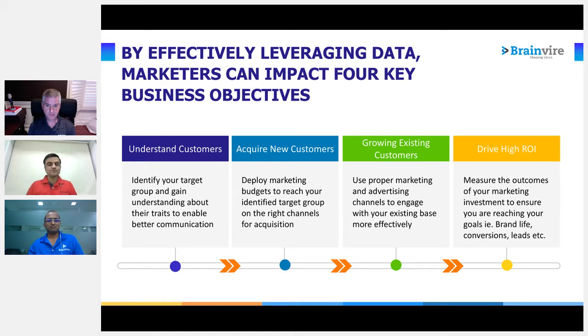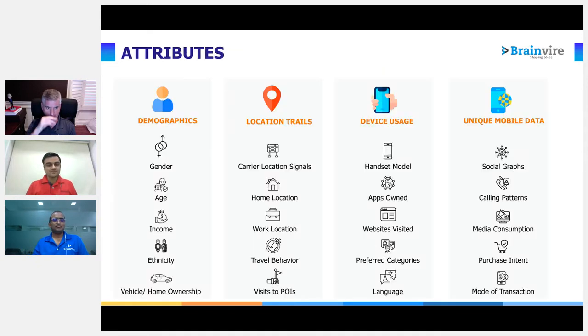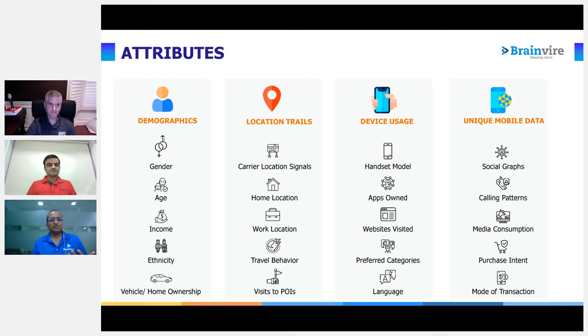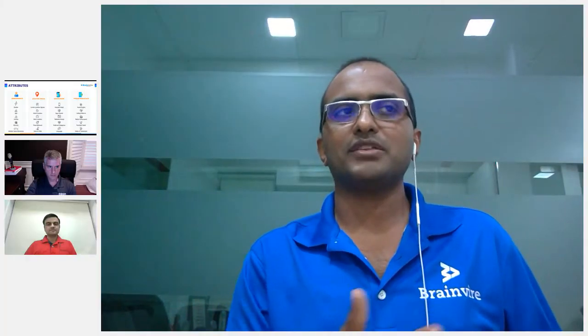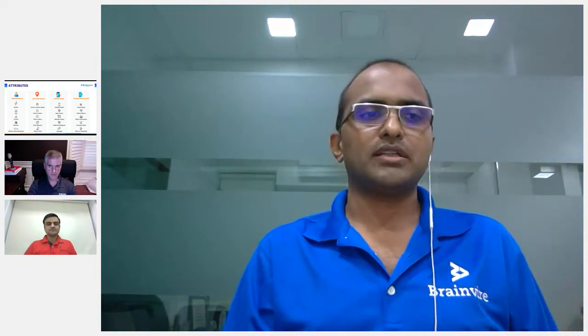Thank you, Marsha. Thank you everyone for joining — hope all of you are safe and secure. Data is very important. What type of data and what are the mediums? Demographics are very important: gender, age, marital status. How to get this information is through a social login in your mobile app. If you're using Facebook login, Google login, or Twitter login, you'll be able to acquire, capture, and store that data in a meaningful way.